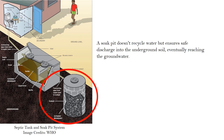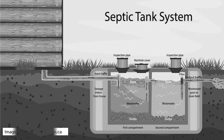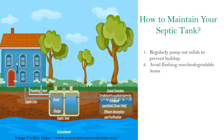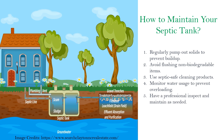Proper design, construction, and maintenance are crucial for the septic tank system to work effectively. Remember, the outlet must be lower than the inlet to prevent overflow. To maintain your septic tank: regularly pump out solids to prevent buildup, avoid flushing non-biodegradable items, use septic-safe cleaning products, monitor water usage to prevent overloading, and have a professional inspect and maintain the system as needed.